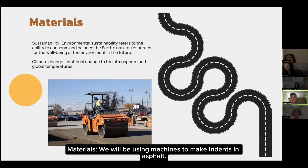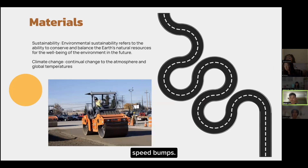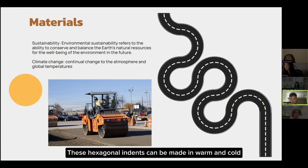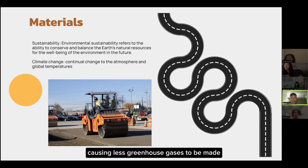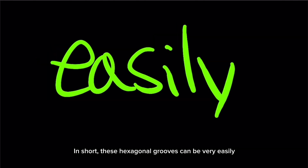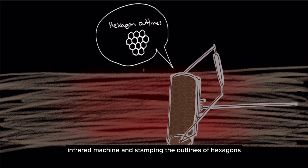Materials: We won't be using machines to make indents in asphalt. Asphalt should be used instead of concrete because it resists damage much more than concrete or plastic speed bumps. These hexagonal indents can be made in warm and cold asphalt mixed together. The hexabumps can be laid in lower temperatures, causing less greenhouse gases to be produced. This is an eco-friendly way of making hexabumps. In short, these hexagonal grooves could be very easily and cost-efficiently constructed by adapting the method of how bricks are designed and stamped into concrete — by heating up asphalt roads with a heavy-duty infrared machine and snapping the outlines of hexagons into the heated asphalt, we will get a permanent imprint.